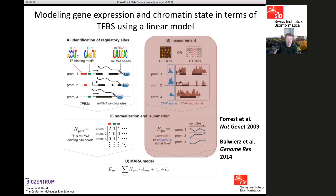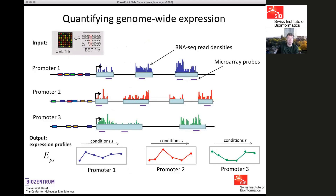Taking the example of RNA-seq data: we map the RNA-seq reads to the known transcripts in the organism, and from this derive another big matrix called the expression matrix, which gives for each promoter P and each sample S the expression of this promoter in sample S.